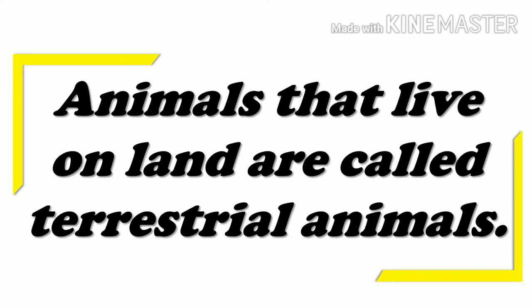Terrestrial animals. Animals that live on land are called terrestrial animals, which include the desert region, polar region and the forest region. Forest region is again subdivided into two: tropical rainforest and deciduous forest. Royal Bengal tiger, jaguar, black panther, and brown bear belong to the tropical rainforest, whereas lion, deer, giraffe and zebra belong to the deciduous forest.